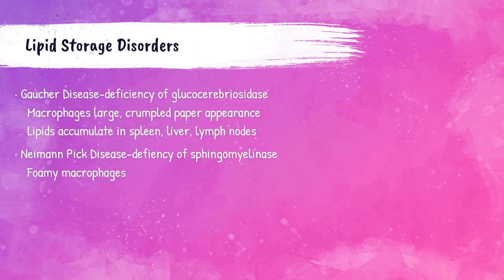There are two lipid storage disorders worth mentioning: Gaucher's disease and Niemann-Pick disease. Gaucher's disease is caused by a deficiency of glucocerebrosidase. Patients have a buildup of fat in the spleen and liver, and they have distinctive macrophages whose cytoplasm looks like large crumpled-up paper. A copyright-free image wasn't available, so please search online to see what these cells look like.